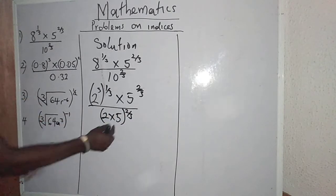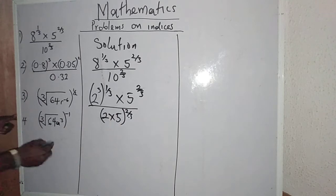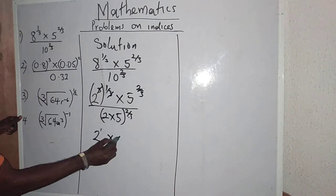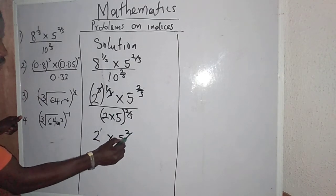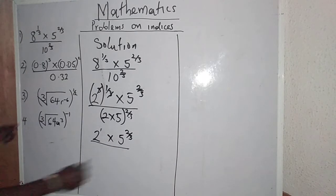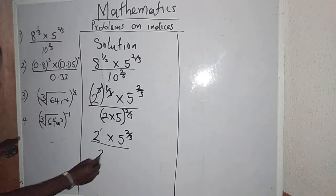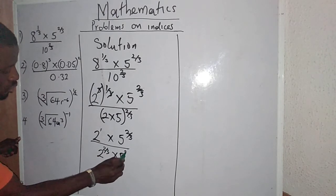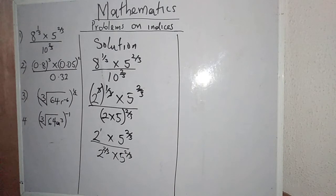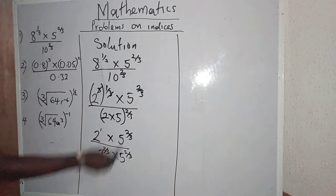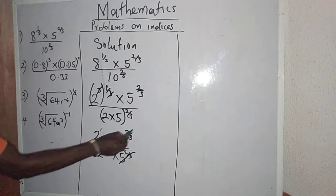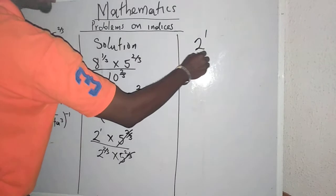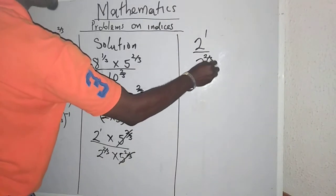This bracket shows that this belongs to both. Therefore, this will cancel with this, leaving 2 raised to the power 1, multiplied by 5 raised to the power 2/3, divided by 2 raised to the power 2/3. Now, something is very good there — they are the same thing and they are in ratio form. So this can cancel this.